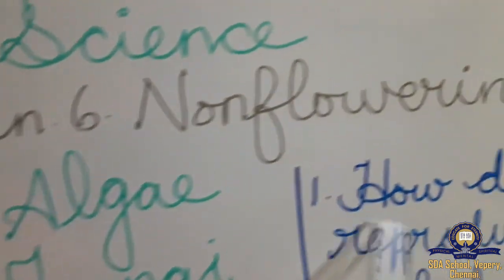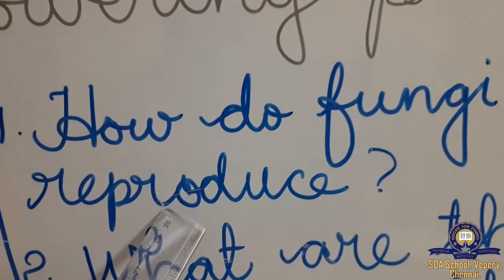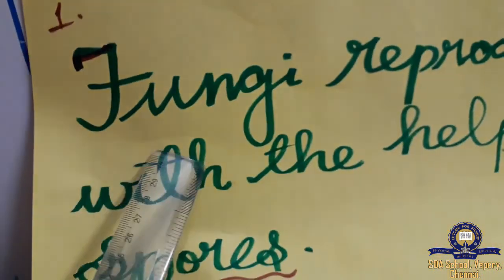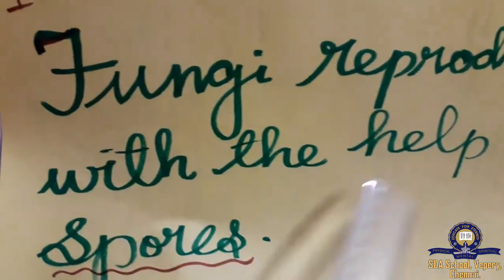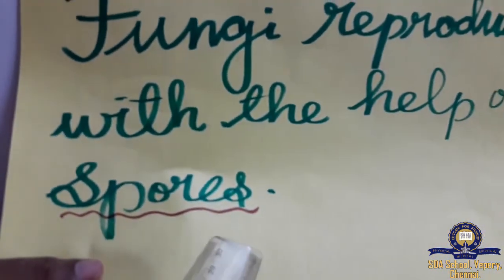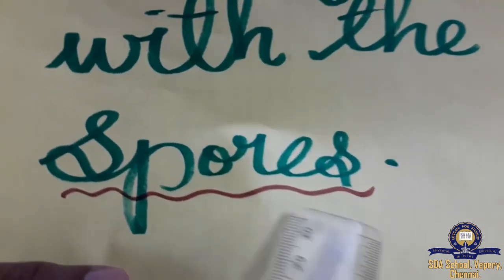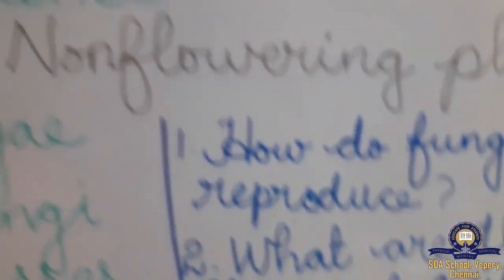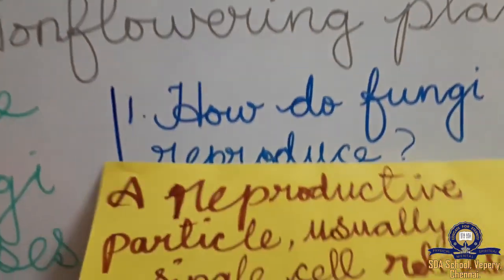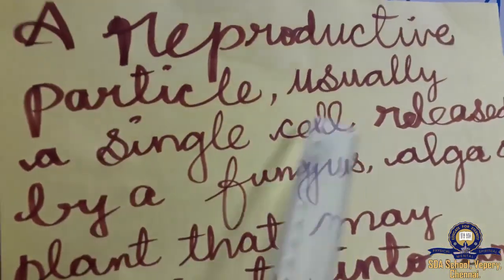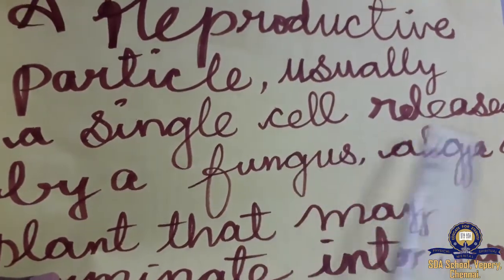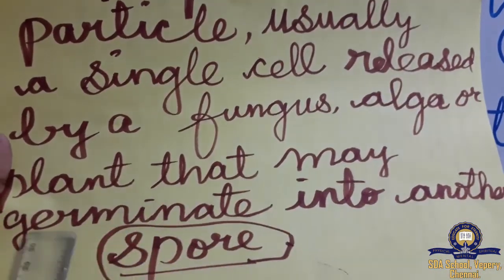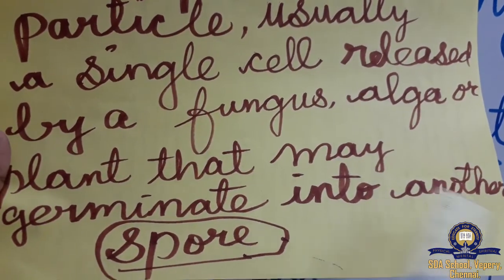Now let us see: how do fungi reproduce? The answer is fungi reproduce with the help of spores. Spores — S-P-O-R-E-S. A spore is a reproductive particle, usually a single cell released by a fungus, alga, or plant that may germinate into another. That is called a spore.